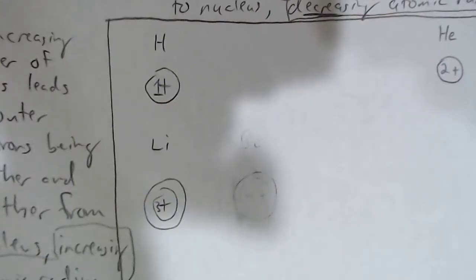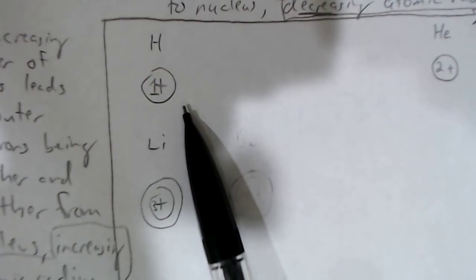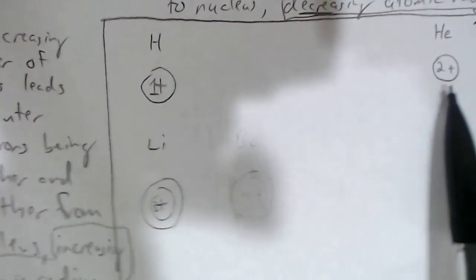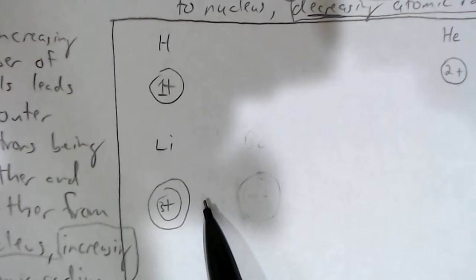Hi everyone. Today we're going to talk about periodic trends — what happens from one element to another as we go to the right in the periodic table or down the periodic table. Certain trends are consistent for atomic radius, ionization energy, and electronegativity.